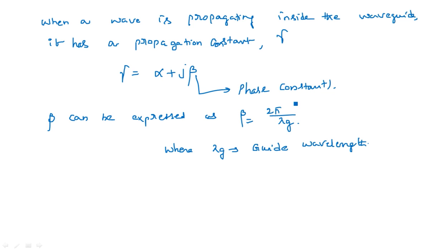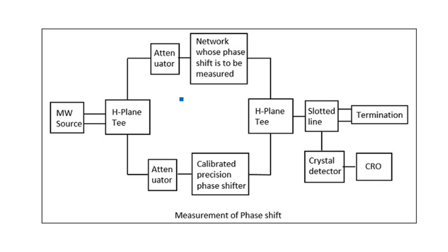Now we are going to calculate the amount of phase shift offered by different devices. This is the microwave bench diagram. The microwave source generates the electromagnetic signal, whose output is given to an H-plane T-junction. Among the magic T, H-plane T-junction, and E-plane T-junction, we are using the H-plane T-junction here in two ways — one output passes information and the other collects the response.